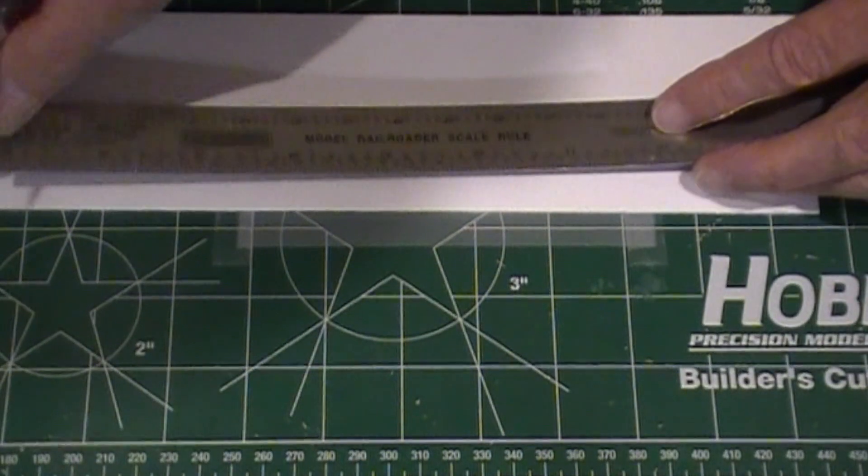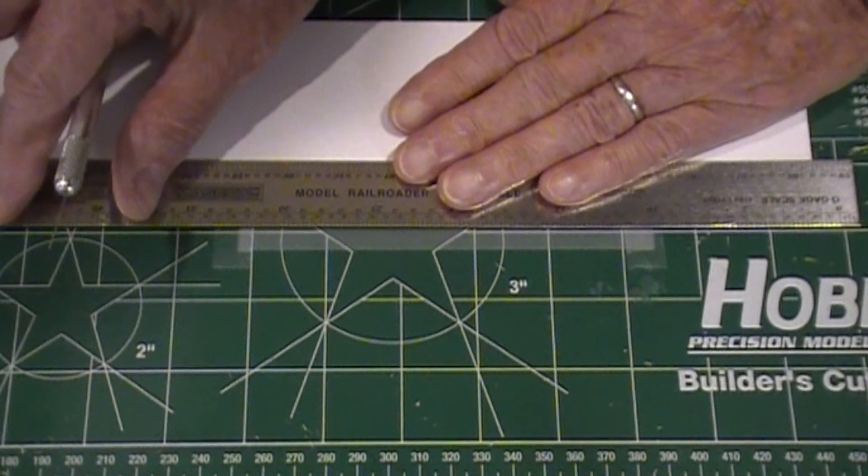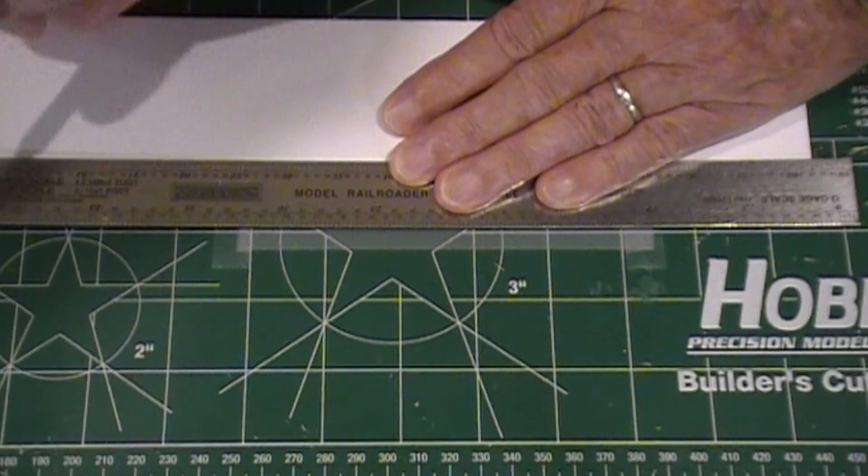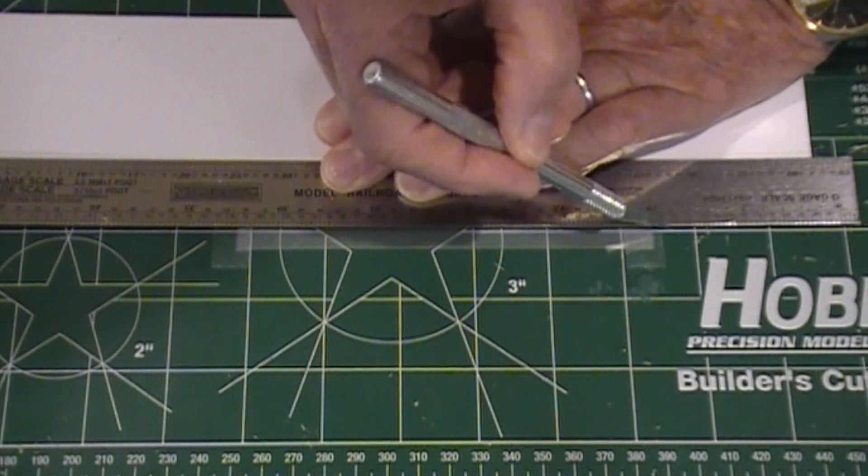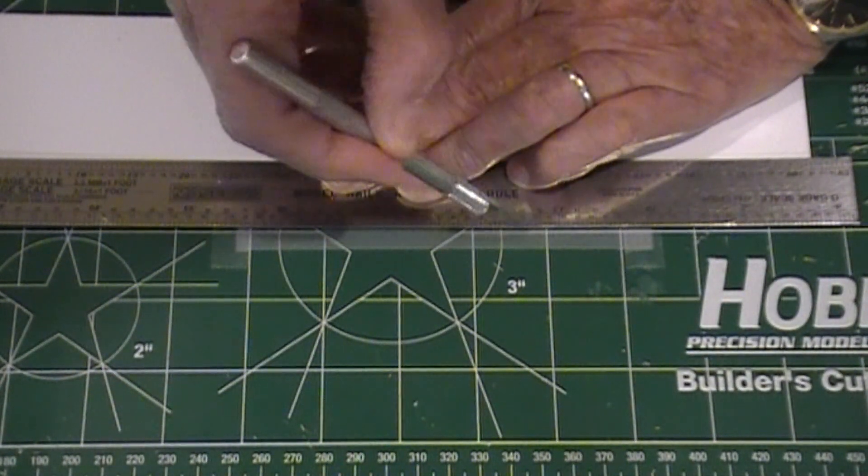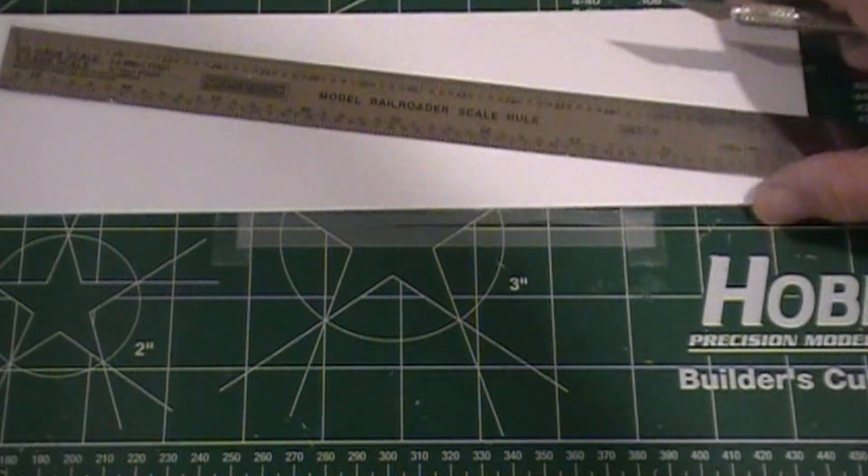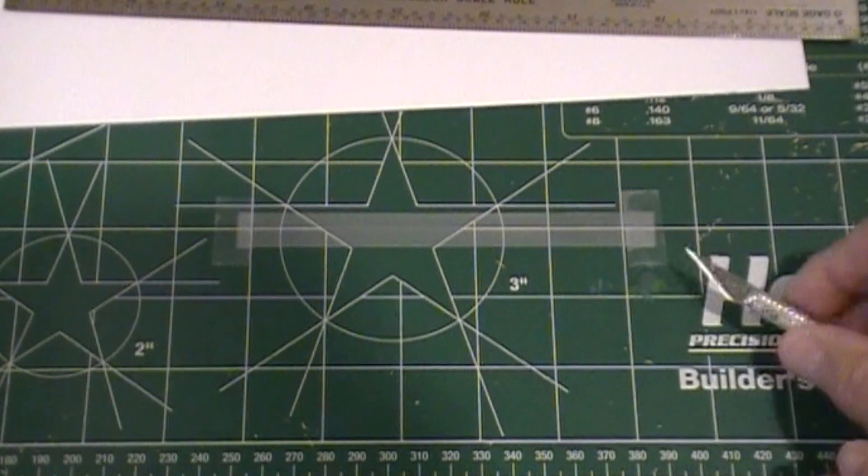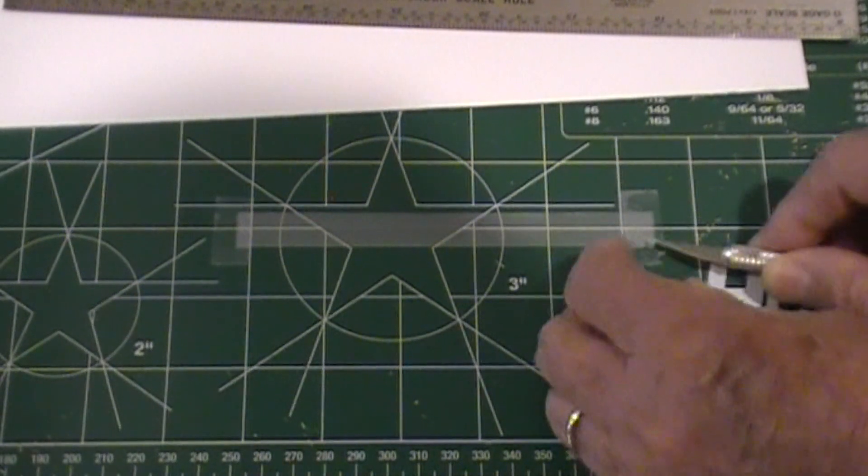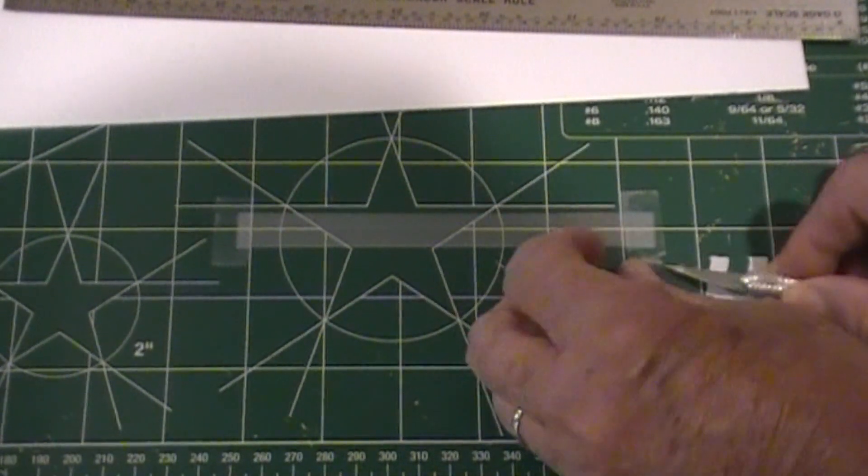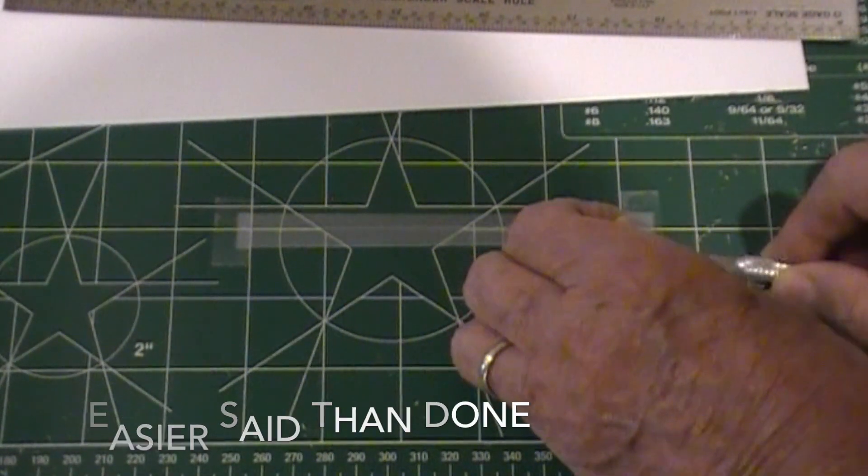I've used a thin piece of styrene here just to hold my ruler up off the sticky area of the tape, and we'll hold that down. I'll use my exacto knife and make a cut down through there, and I'll come in and remove this section of the tape.